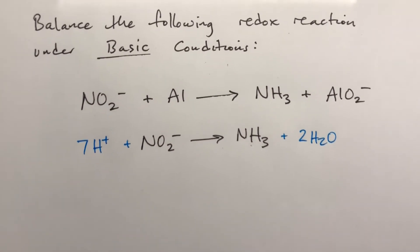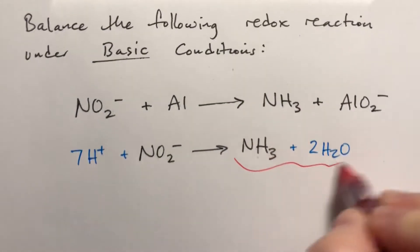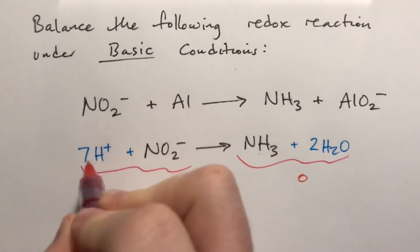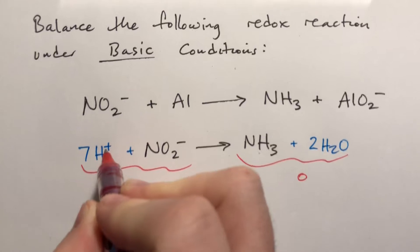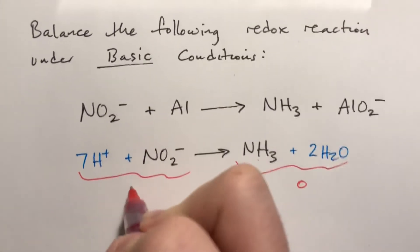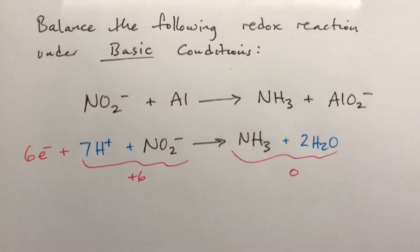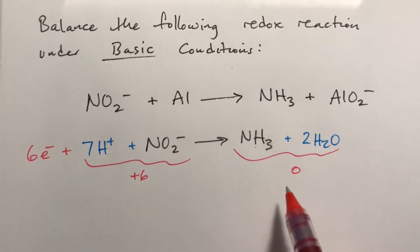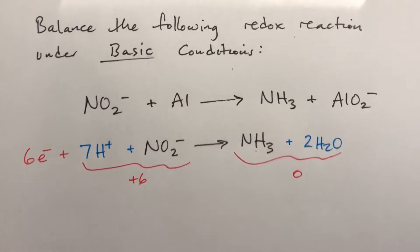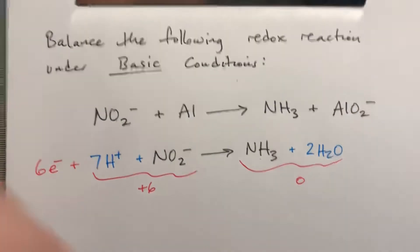Okay, so now we've got to figure out the charges. This side everything adds up to zero. This side it's seven times one is seven minus one is plus six. So we're gonna need six electrons on that side to make it add up to zero also. So the six minus and the six plus adds up to zero.